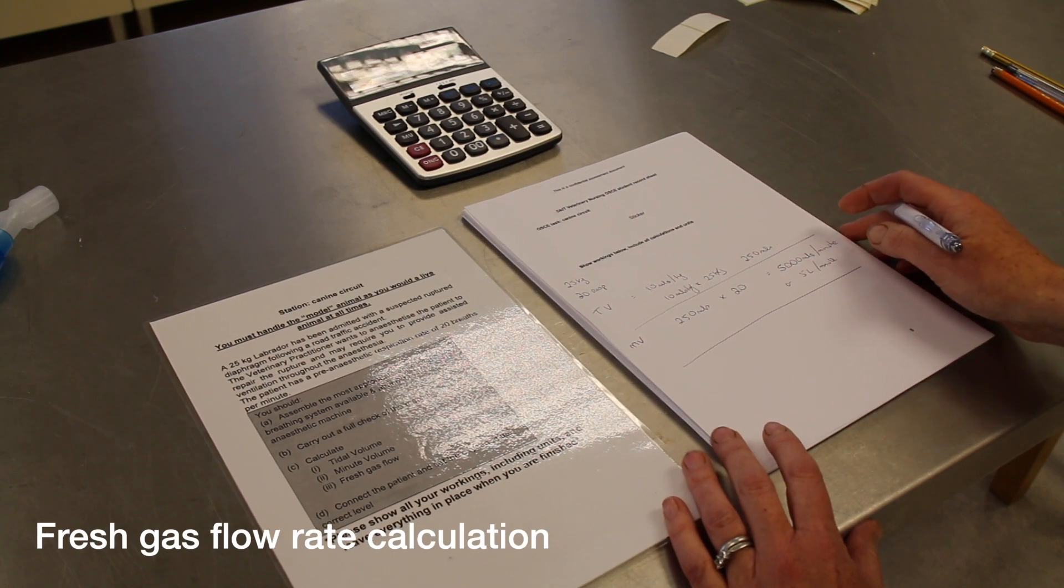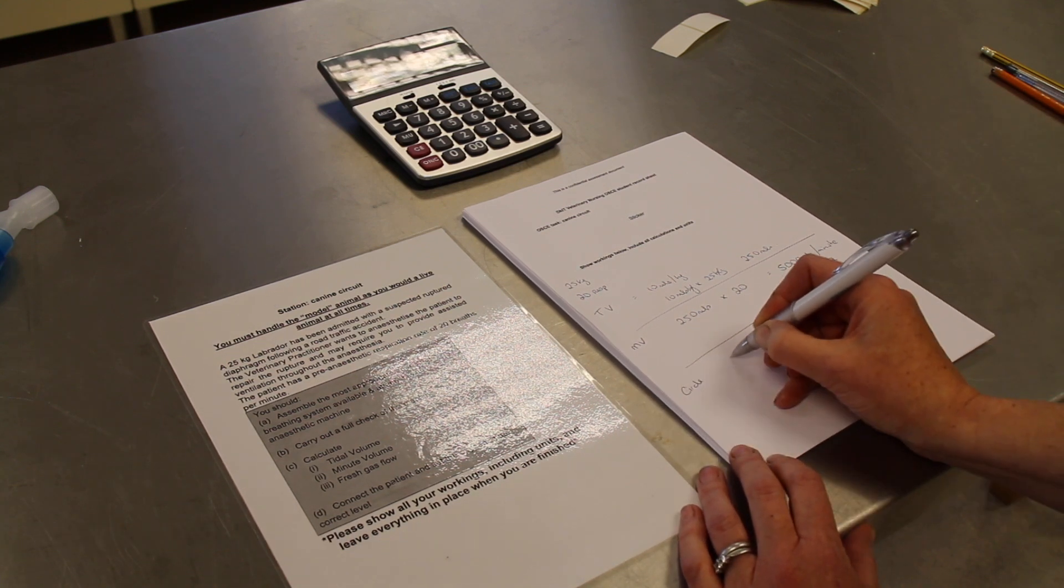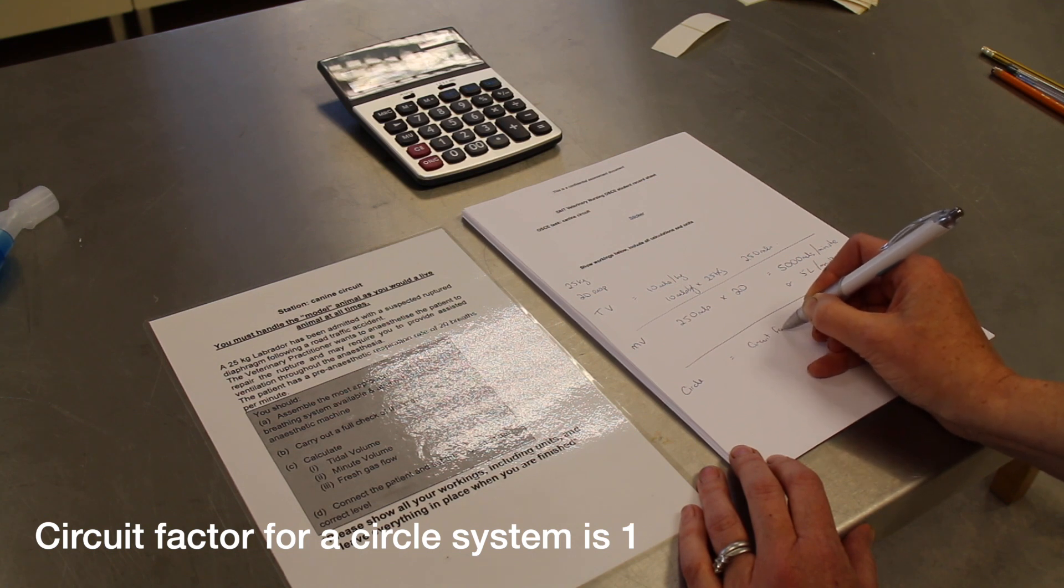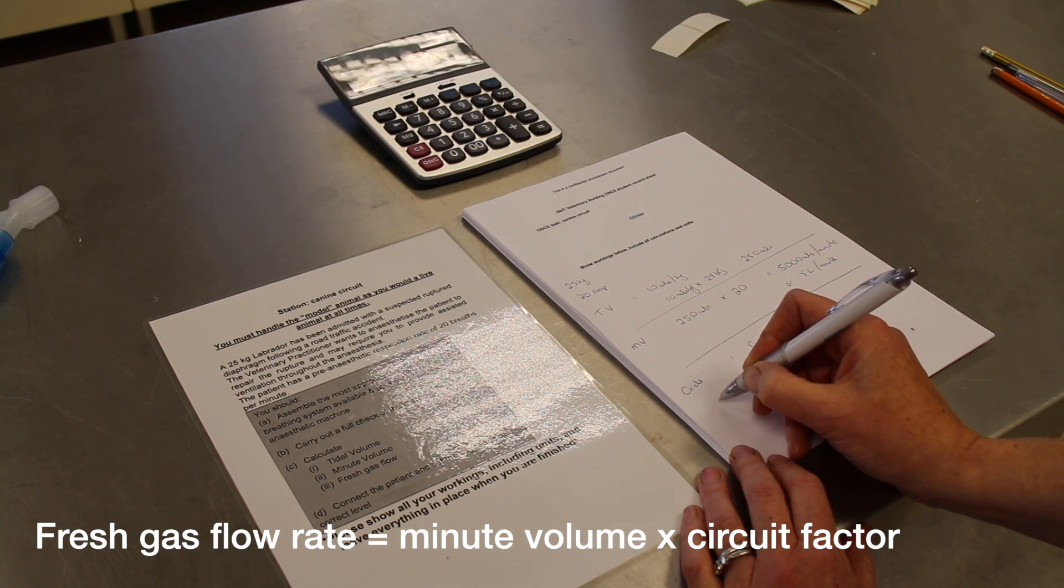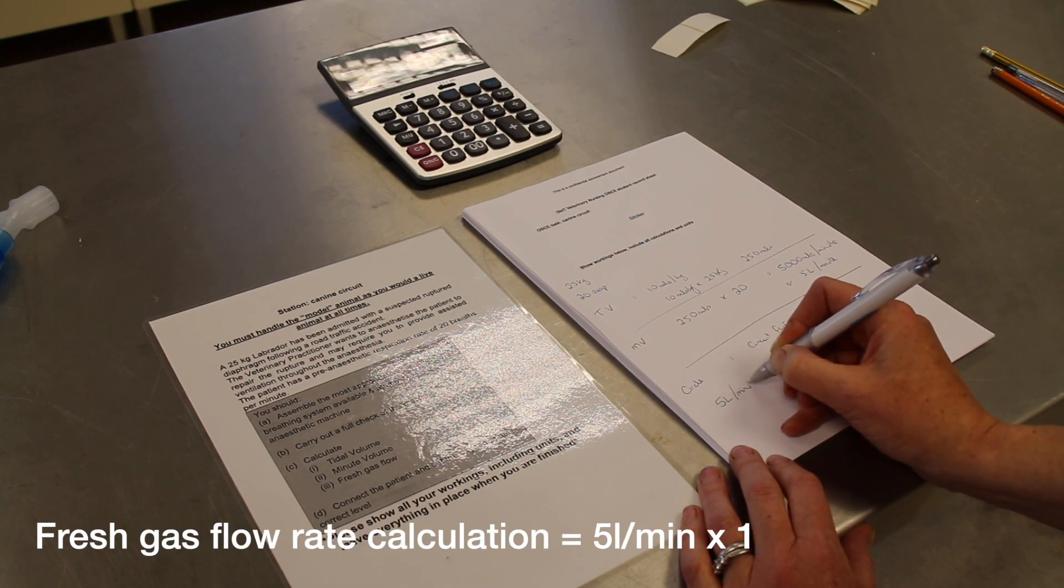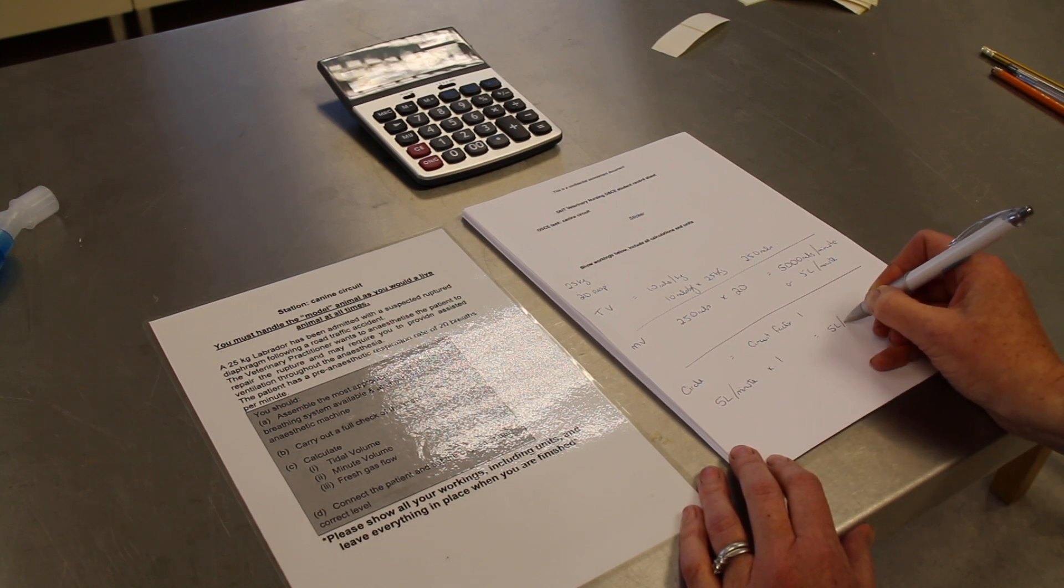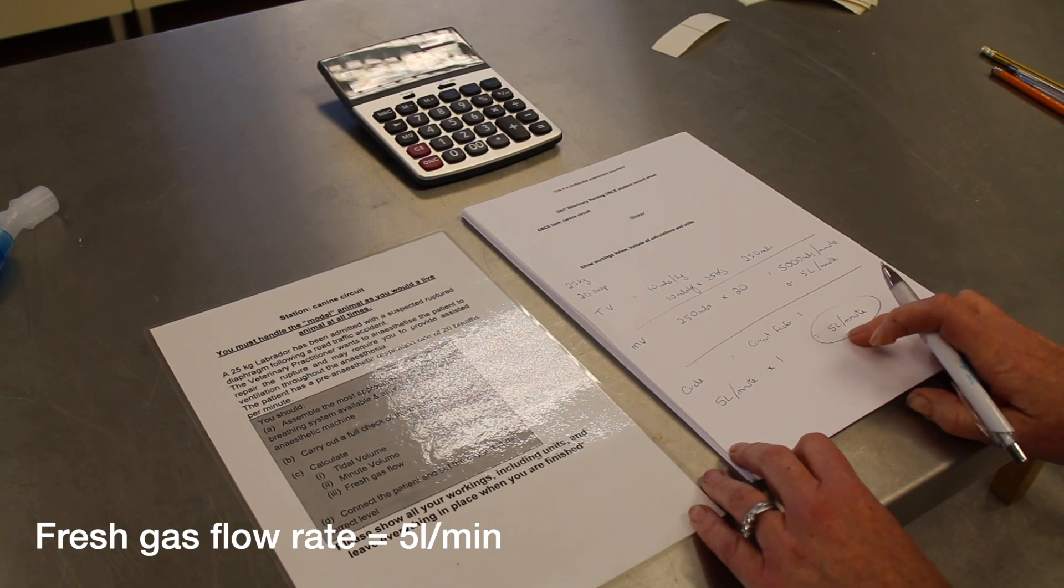The circuit we're going to select for our patient is the circle, which has a circuit factor of 1. We take our minute volume answer, 5 liters per minute, and multiply it by 1, giving us 5 liters per minute. This is what we'll set our oxygen flow at.